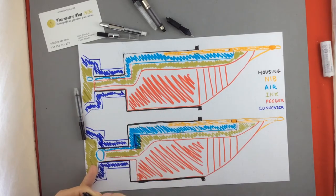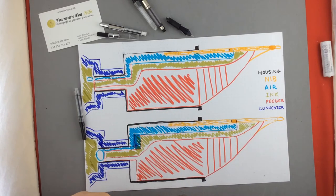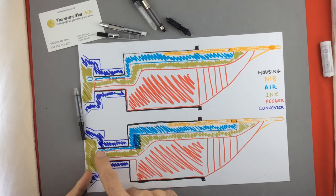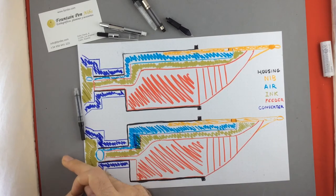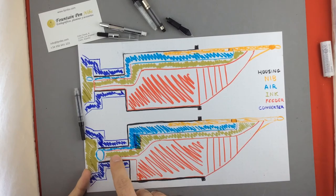But in this case it makes a little bubble and that bubble doesn't go into the reservoir so it doesn't let the ink come into the feeder.